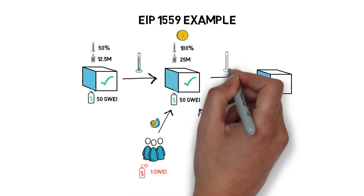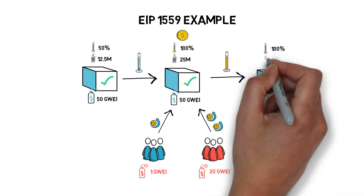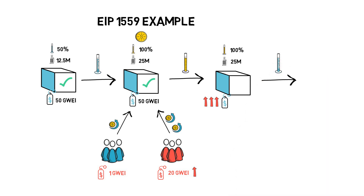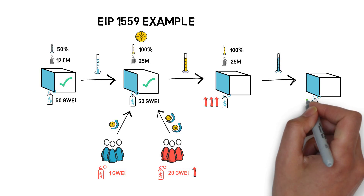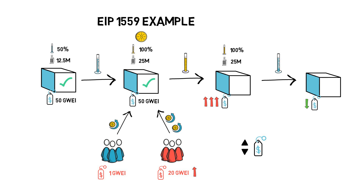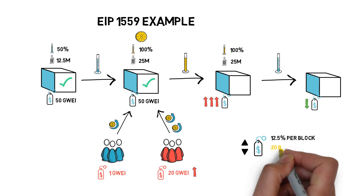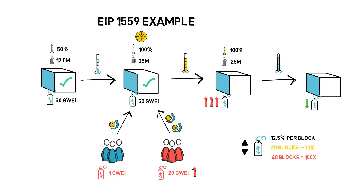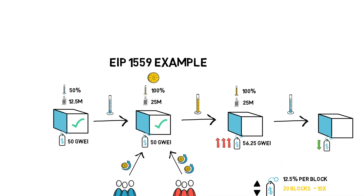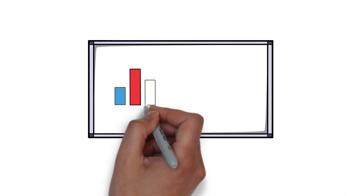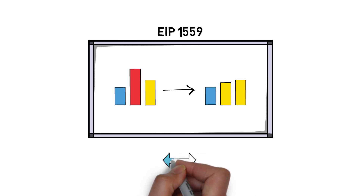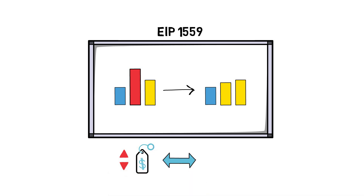If the network activity and demand for block space remain high, miners would keep producing full blocks, increasing the base fee with each subsequent block. At some point the fee would become high enough to drive off some users, causing the network to come back to below 50% utilization and lowering fees in subsequent blocks. The base fee can increase or decrease by a maximum of 12.5% per block, so it would take roughly 20 blocks — around 5 minutes — for gas prices to 10x, and 40 blocks to 100x. In our example, the second block would have a base fee of 56.25 gwei. This demonstrates how spikes in network fees can be smoothed out when EIP-1559 is implemented.